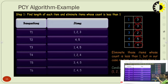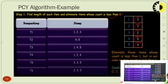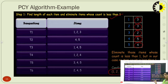We eliminate those items whose count is less than 2. In our case no item count is less than 1 — actually no item count is less than 2 — so all items {1,2,3,4,5} are retained in the candidate itemset, since none of the items have a count less than the minimum threshold.